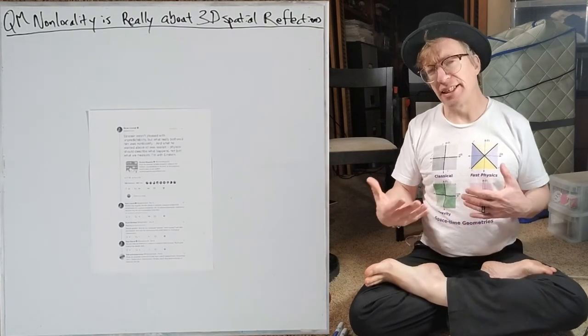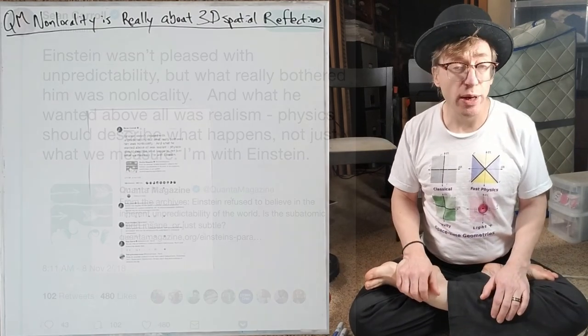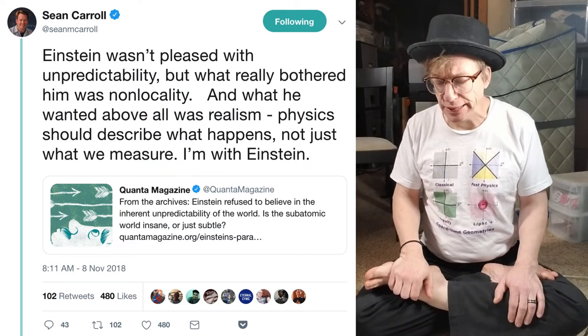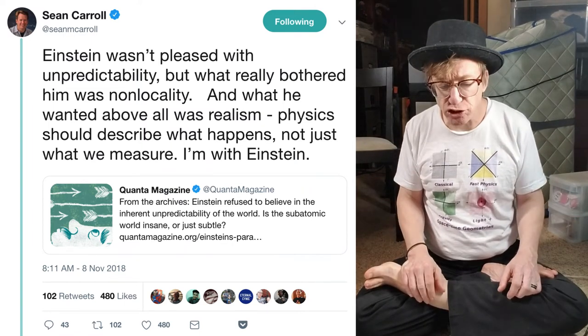This started from a tweet I read from Sean Carroll on November 8th. Einstein was not pleased with unpredictability, but what really bothered him was non-locality. What he wanted above all was realism. Physics should describe what happened, not just what we measure. And I'm with Einstein.